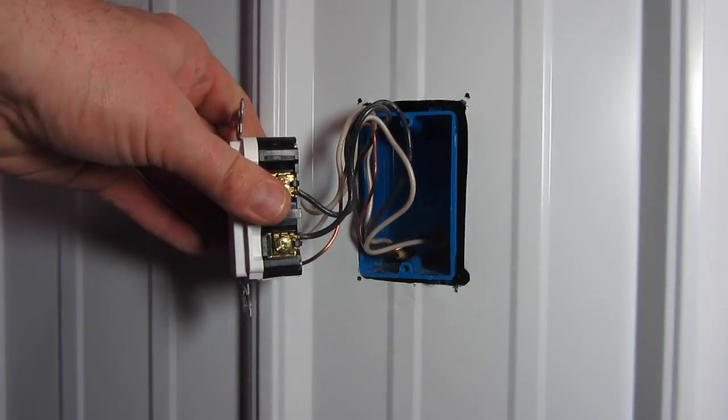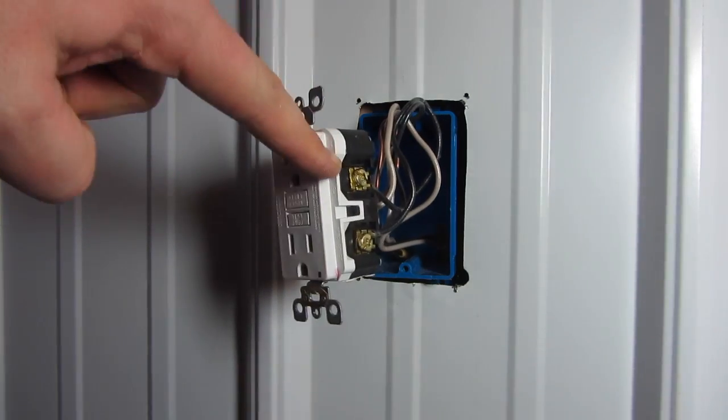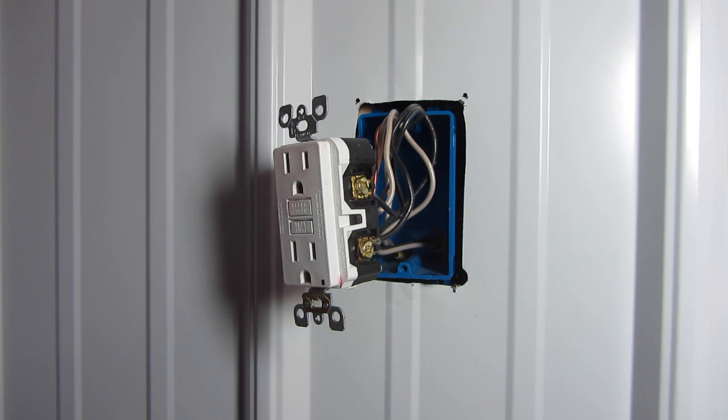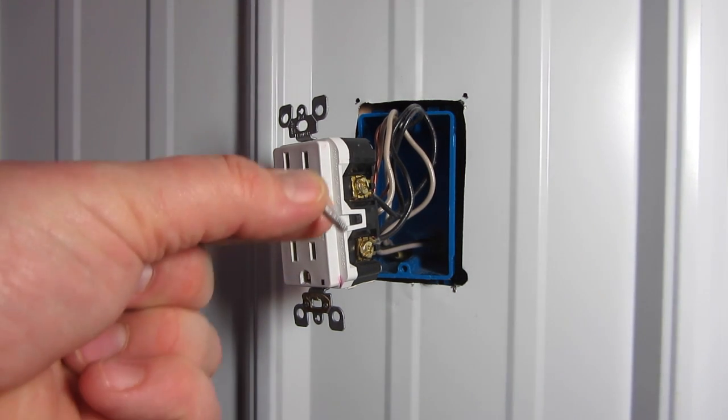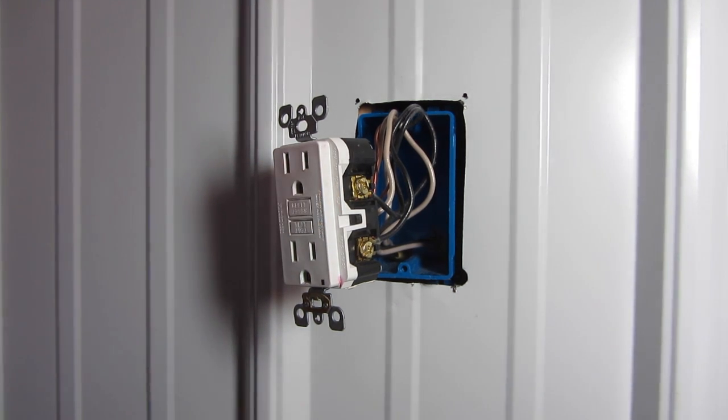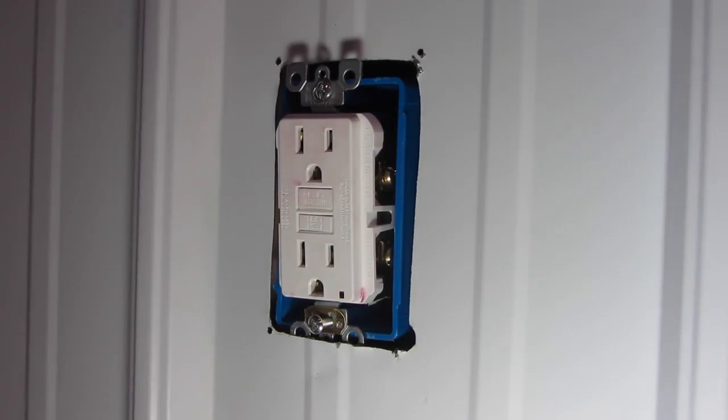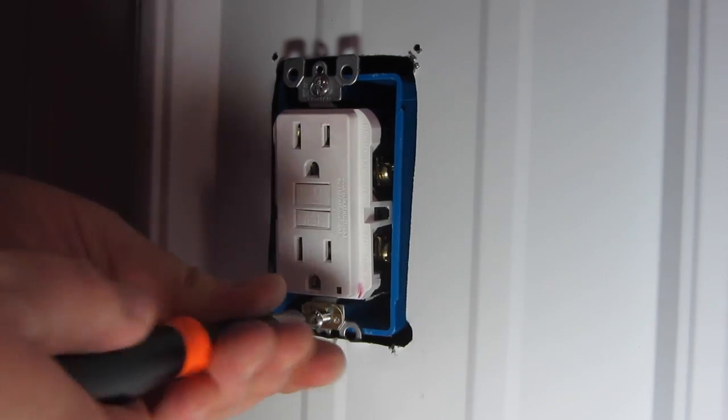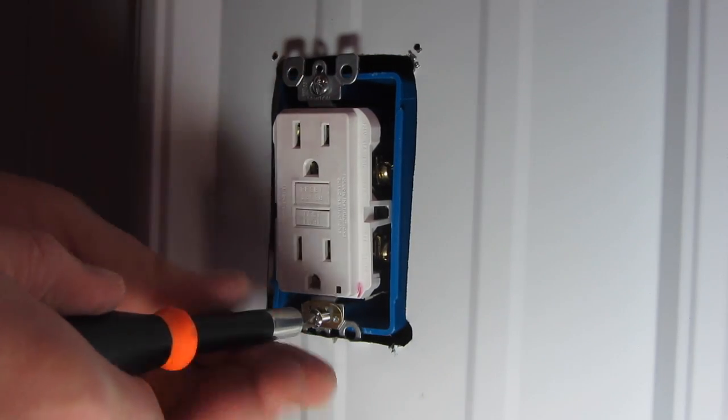Fold and zigzag the wires like this to where you can push the outlet and wires back into the box. And then secure with your screws. Make sure the outlet is straight and tighten the screws on the bottom and on the top.